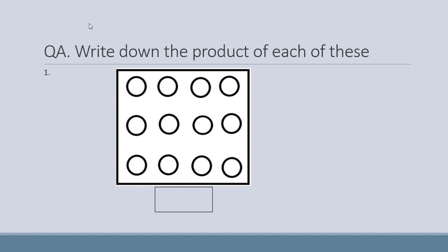Question number eight: write down the product of each of these. We have a figure and we have to tell how we can write this in multiplication. We have one, two, three, four columns and one, two, three rows. Hamare paas four rows aur three columns hain. So write four multiply three. What is the answer of four multiply three?